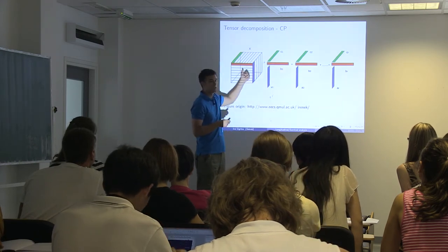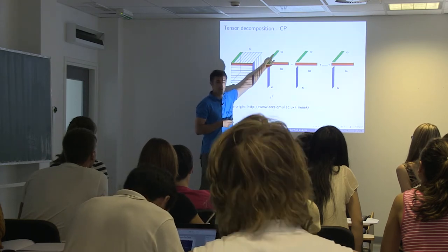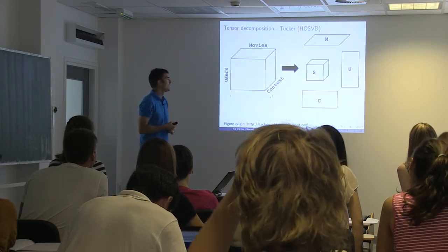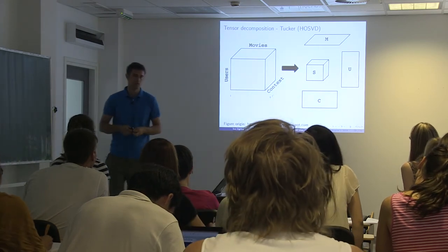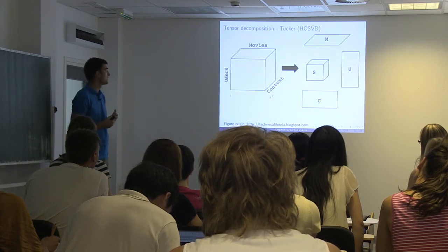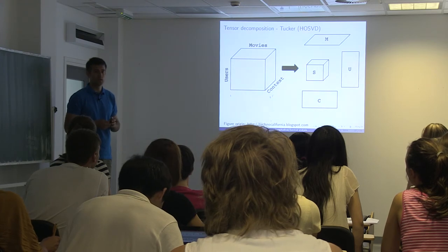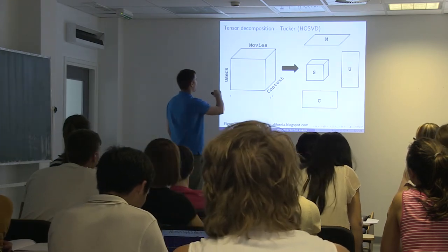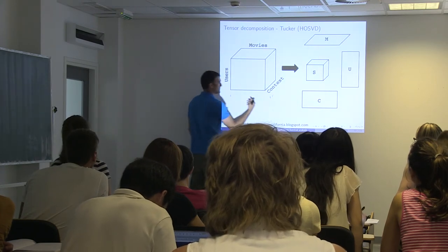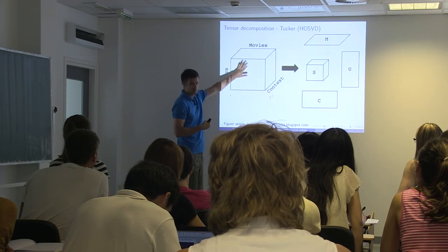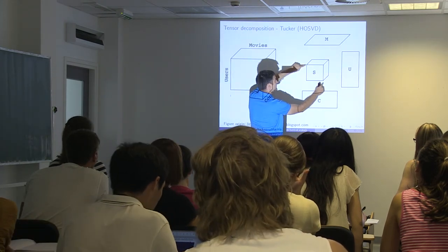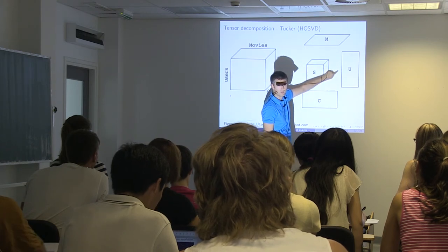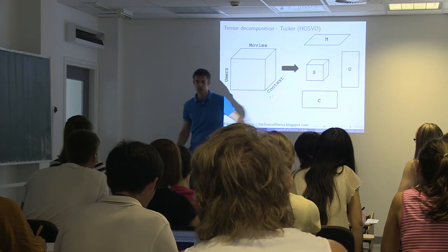The first one is called CP decomposition. The idea is to decompose that 3D thing into different simpler things which will describe different parts of the beginning. For example, describe sick people, describe covariates and describe time points. It can be done like this or like this. This is an example that is used when somebody recommends movies to you. So if you have users as rows, movies as columns. And then you have context as the third part. You can decompose this thing into a smaller, which is called core tensor. And matrix, matrix, matrix. And this matrix will tell you something about movies. This will tell you something about users. And this will tell you something about context. So we're going to try to do that with time data.